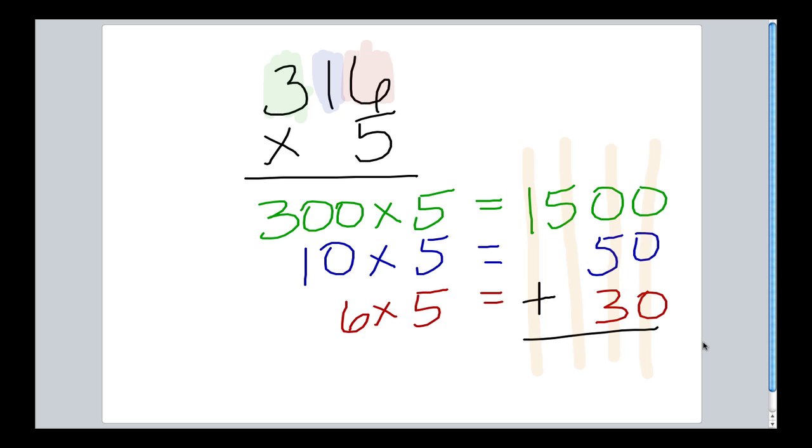I'll take 0 plus 0 plus 0 to give me 0. 0 plus 5 plus 3 gives me 8. 5 and nothing is 5, and 1 and nothing is 1. My final answer, 1,580.